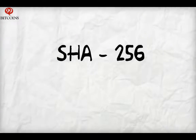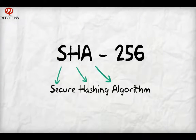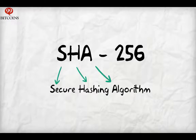The SHA-256, or Secure Hash Algorithm 256, is just a specific way of hashing, the same way we could have named our previous example for hashing the 99Bitcoins hashing method.